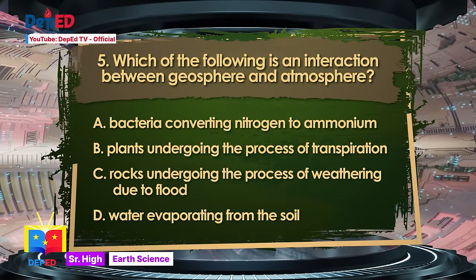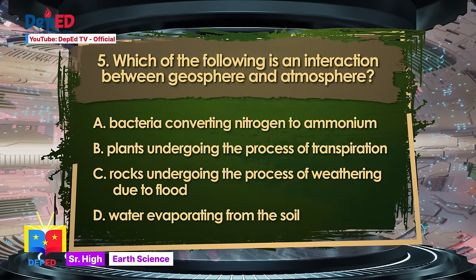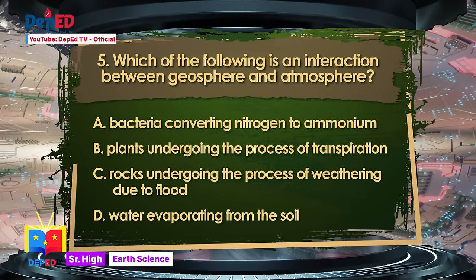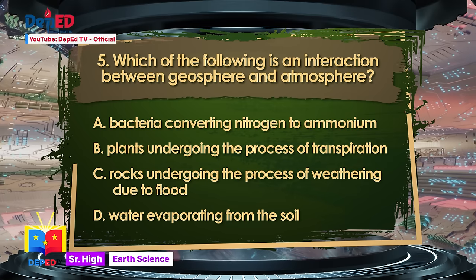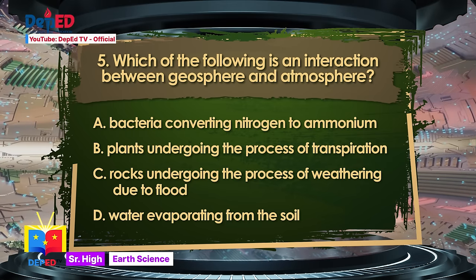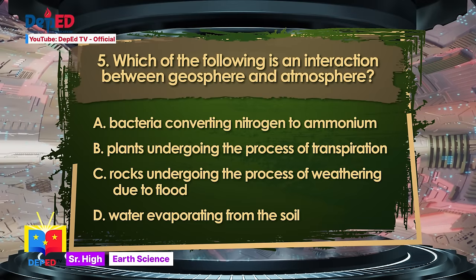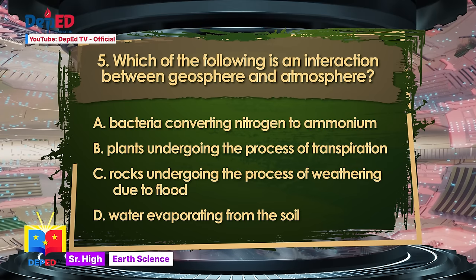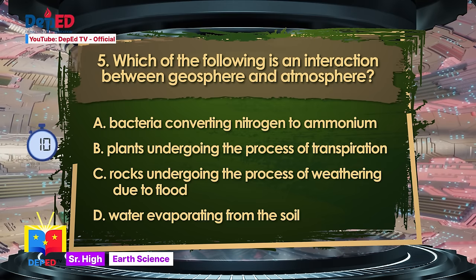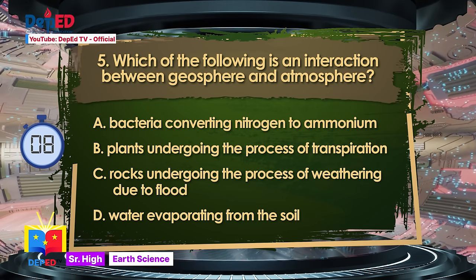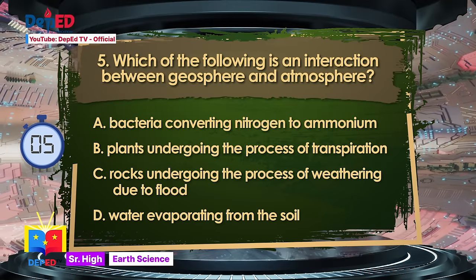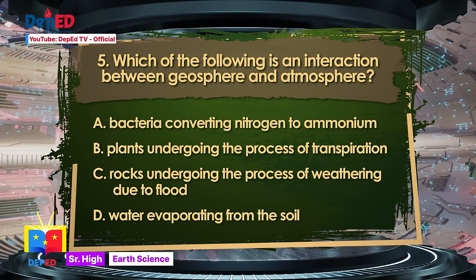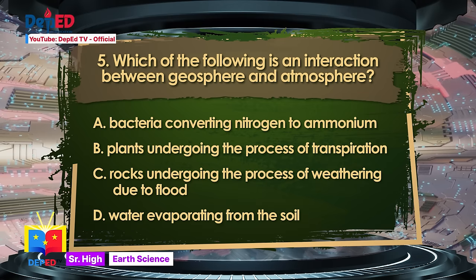Number 5. Which of the following is an interaction between geosphere and atmosphere? A. Bacteria converting nitrogen to ammonium. B. Plants undergoing the process of transpiration. C. Rocks undergoing weathering due to flood. D. Water evaporating from the soil. The answer is letter D — Water evaporating from the soil.